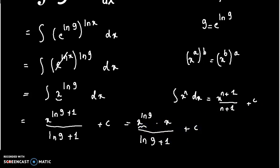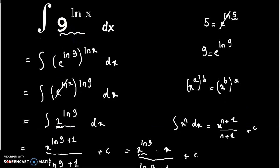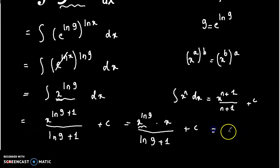Now x to the power ln 9 is equal to 9 to the power ln x, which we proved earlier. So we can write it as 9 to the power ln x times x over ln 9 plus 1, plus c.